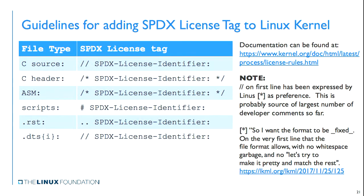As part of that maintainer summit, guidelines were given on how to document the identifier — it should be the first line in a file. This has been formally added into the kernel documentation. The biggest source of pushback was using double-slash in C source files, but Linus basically said that's what he wanted to see, so that's what we went with. By having that tag there, we can now grep for it and get a good list of licenses.